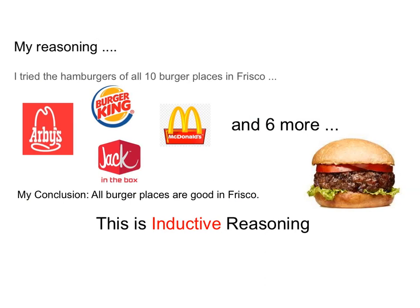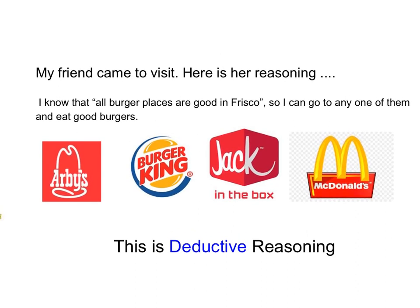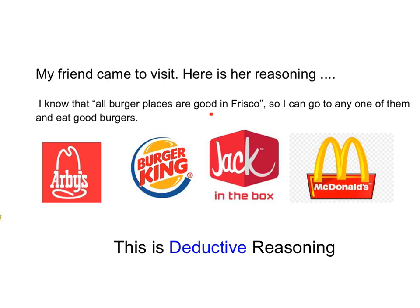Now my friend came to town to visit and I told her all burger places are good in Frisco. Of course she trusted me. So when she looked for a place to eat, she was thinking: I know that all burger places are good in Frisco, so I can go to any of them and eat good burgers. Her thinking was from the general principle, applying that principle to each special case. So her conclusion is each of these restaurants would give her good burgers. This reasoning process is deductive reasoning — from a general principle to draw a conclusion on each special case.